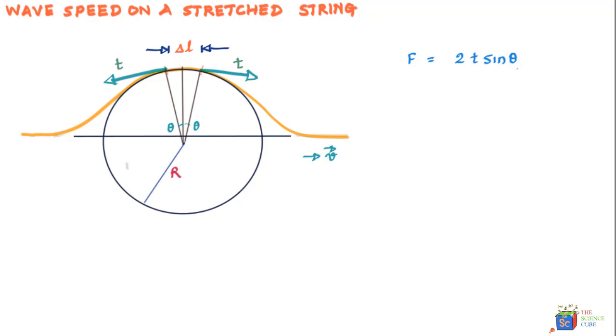If you assume that θ is very small, we can say that F = 2Tθ, where θ is in radians.